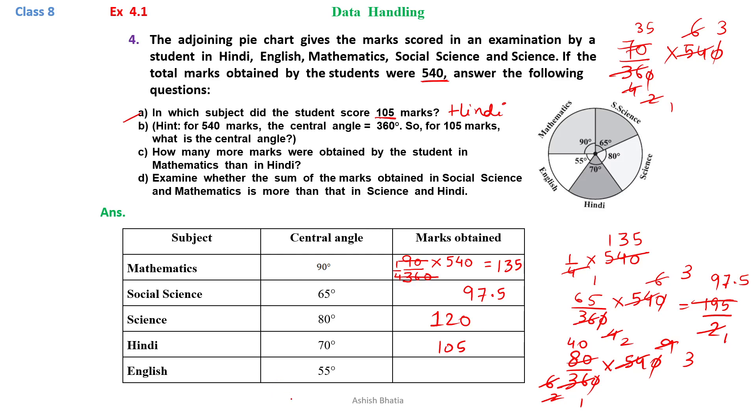Now, we have to tell in English also the remaining marks. We can calculate that: 55 divided by 360 into 540. 9 4s are 36, 9 6s are 54, 2 2s are 4, 2 3s are 6. This will give us 165 divided by 2. That is 2 8s are 16, 2 2s are 4, 0.5. So that is 82.5 marks in English.